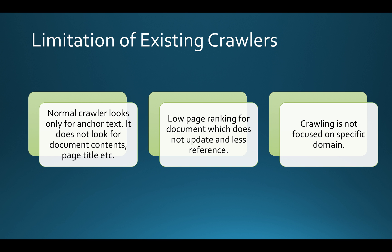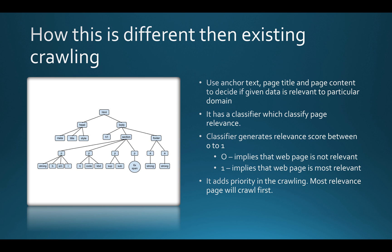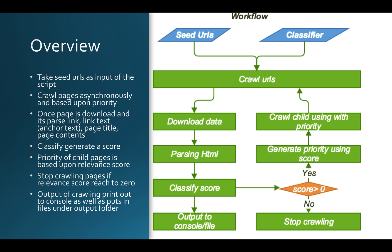What this project improves over existing crawlers: it not only looks at anchor text but also page title, page content, and other information to identify if a given page is relevant. A classifier uses this information and generates a score between zero and one — zero means the page is not relevant at all, one means it is most relevant. We also use this score to assign priority to child links found in a given page, crawling the most relevant pages first.